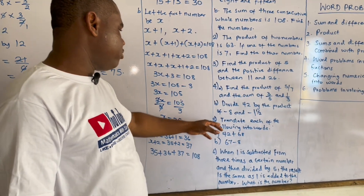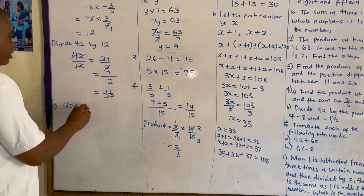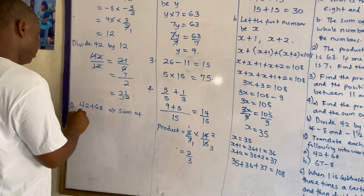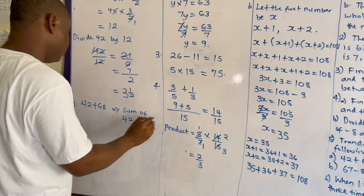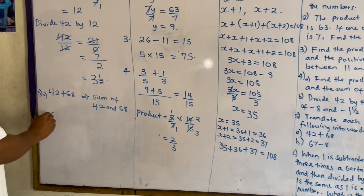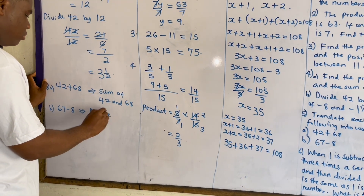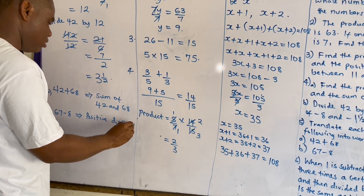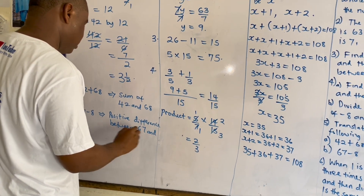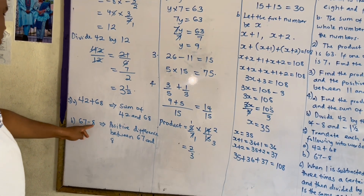For example five: translate each of the following into words. Forty-two plus sixty-eight — this is the sum of forty-two and sixty-eight. Then sixty-seven minus eight: this is the positive difference between sixty-seven and eight. The reason we say positive difference is that the number that comes first, sixty-seven, is greater than the one that follows, eight.